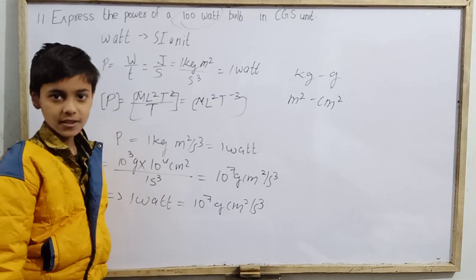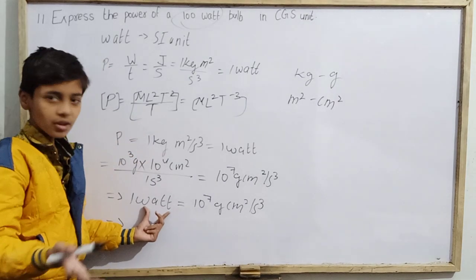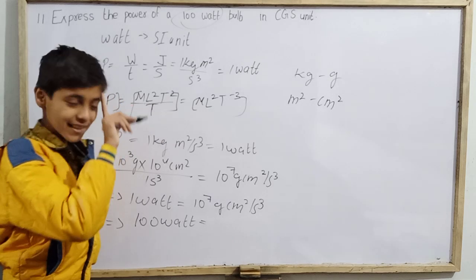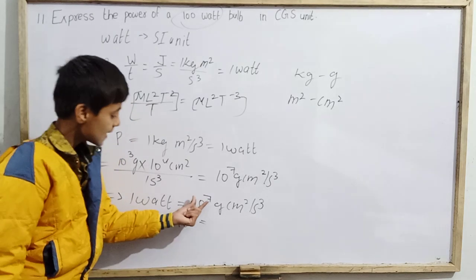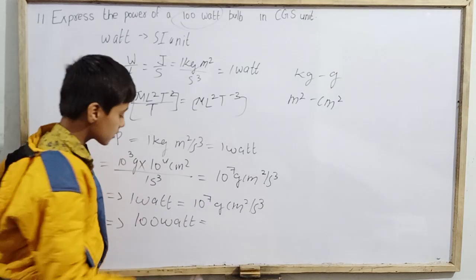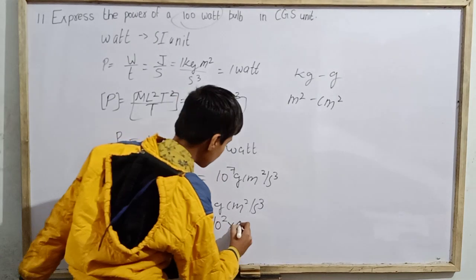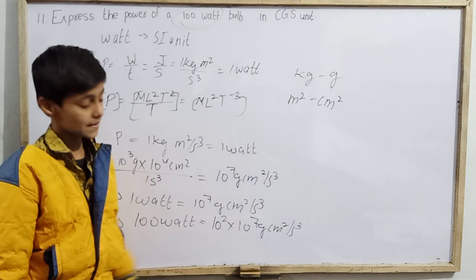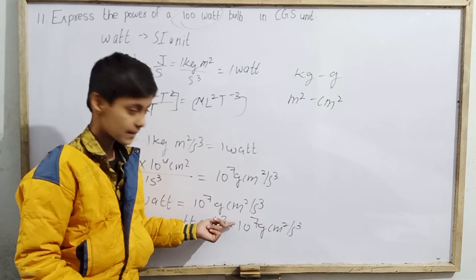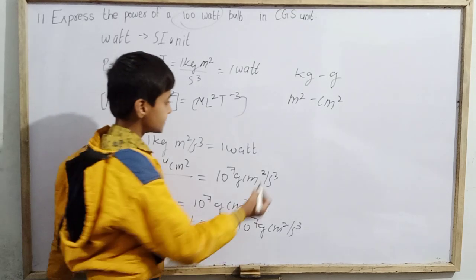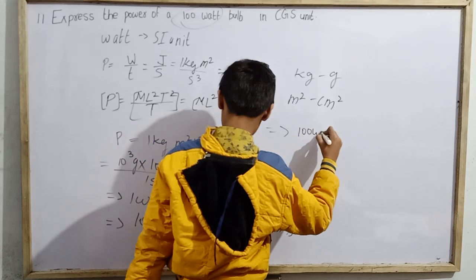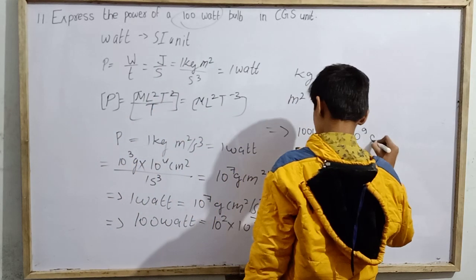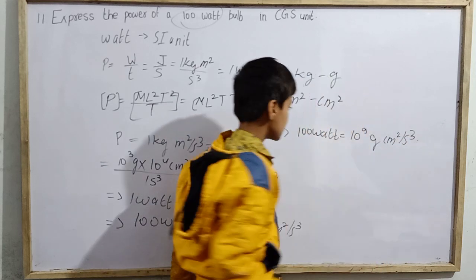Now we need to convert 100 watts, not just 1 watt. So we multiply by 100. In 1 watt there are 10⁷ CGS units, so multiply by 100, which is 10². Therefore 100 watts equals 10⁷ × 10² = 10⁹ gram·cm² per second cubed. So 100 watts equals 10⁹ g·cm²/s³.